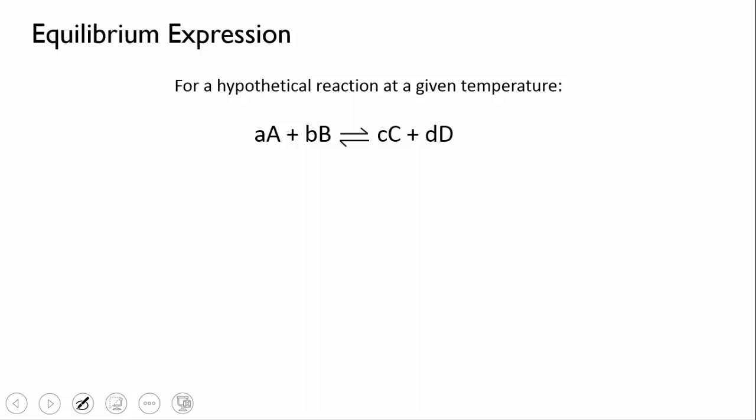So take a hypothetical reaction involving chemicals A and B turning into C and D. The small a, b, c, and d in this equation are the stoichiometric coefficients, the numbers that we have to put in there to balance the chemical equation.